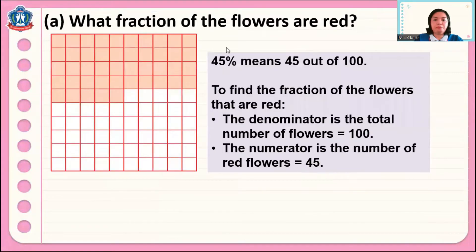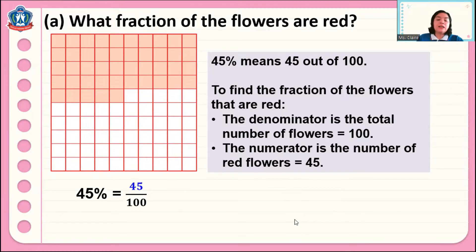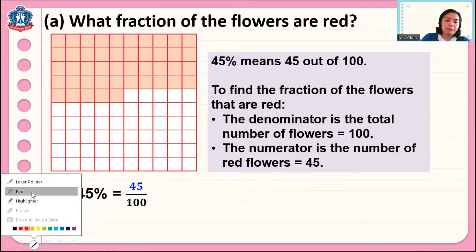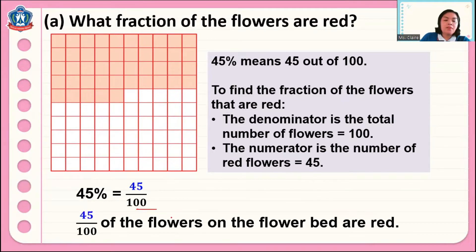So 45 means 45 out of 100. To find the fraction of the flowers that are red, the denominator is the total number of flowers, which is 100, and the numerator is the number of red flowers, which is 45. So 45 percent is equal to 45 out of 100. Therefore, 45 out of 100 of the flowers in the flower bed are red.